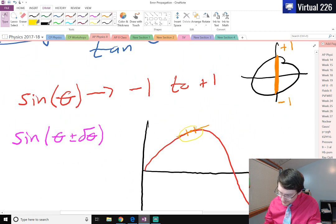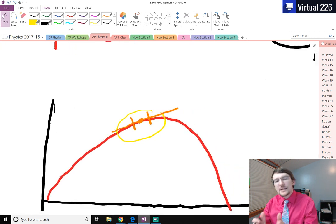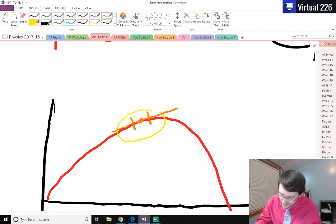So what we're going to do is, we're going to take a step forward on the function. That's the positive del theta. And we're going to take a step backwards on the function. That's the negative del theta. And instead of being on the function, we're going to be on this straight line that we drew.